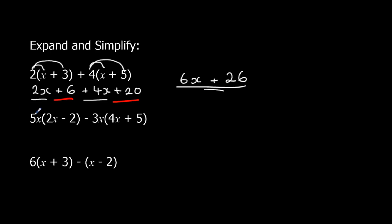Same thing again. 5x times 2x. 5 times 2 is 10. x times x, x squared. So this is negative. Negative times a positive is going to be a negative. And 5x times 2, 5 is 10. So 10x.